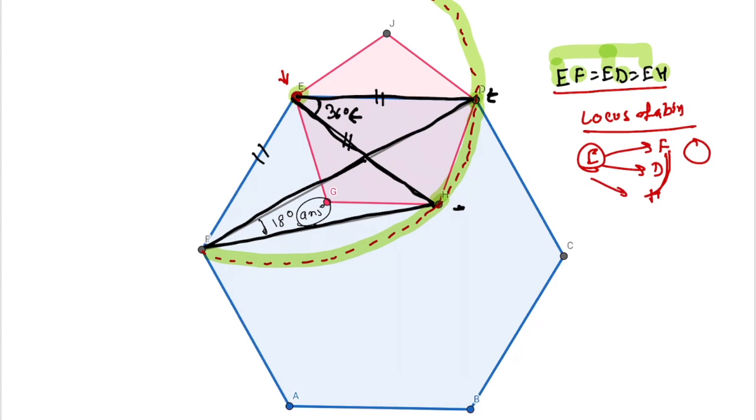This is a very simple question. You just need to do one small construction, join E to H. And then by the congruency you need to say EF equals ED equals EH, and from the circle definition, locus of the circle.